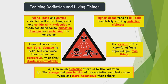Alpha, beta, and gamma radiation can enter living cells and collide with molecules. These collisions cause ionization, damaging or destroying the molecules. Lower doses cause non-fatal damage to cells but can cause them to become cancerous when they divide uncontrollably.